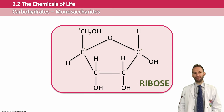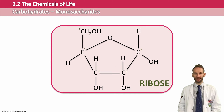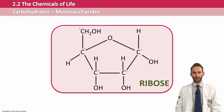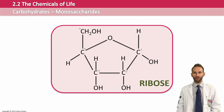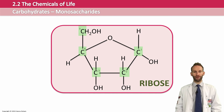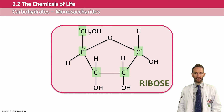Here is ribose. As you can see, it is a pentagon shape. There are five carbons joined in a ring with oxygen at the top, and a CH₂OH group coming off the fourth carbon.